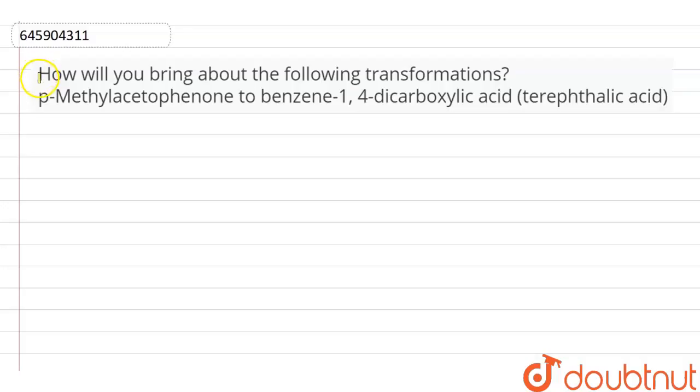Here is the question: how will you bring about the following transformations? P-methylacetophenone to benzene 1,4-dicarboxylic acid, or we can say terephthalic acid.